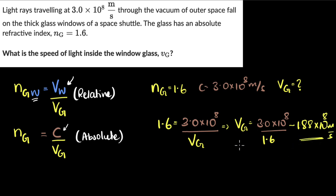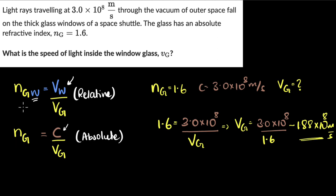You can also note one more important thing. This number tells you how much light slows down in glass. Since the number is 1.6, it means that in that medium, light slows down 1.6 times compared to the first medium — that is, vacuum. That's the meaning of refractive index: it's a measure of how much light slows down in one medium compared to the other.